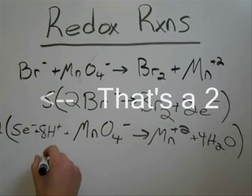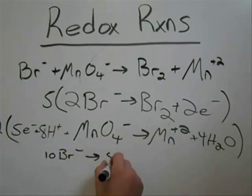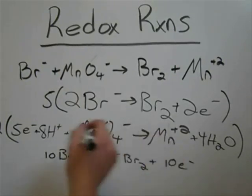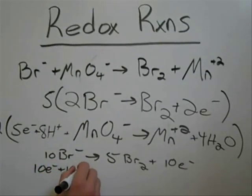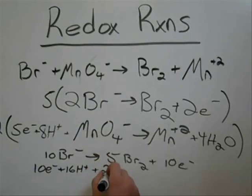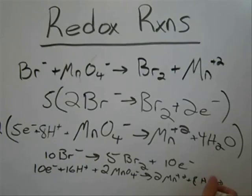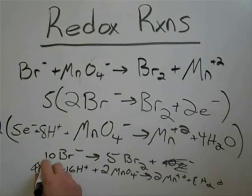And that's going to give us 10 Br minus yields 5 Br2 plus 10 electrons. And over here we're going to have 10 electrons plus 16 H plus plus 2 MnO4 minus yields 2 Mn plus two plus 8 H2O. You can see why these problems take forever, because we just have so much stuff now. But now what we're going to do is just add these two parts together. So as you can see, the ten electrons cancel out, so we can stop worrying about those.